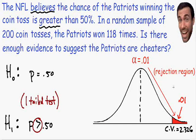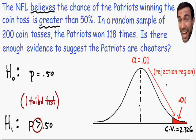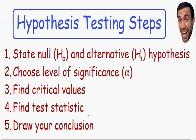Step number four says to find the test statistic. We're going to perform a test and get a z value, since we're using a z distribution.